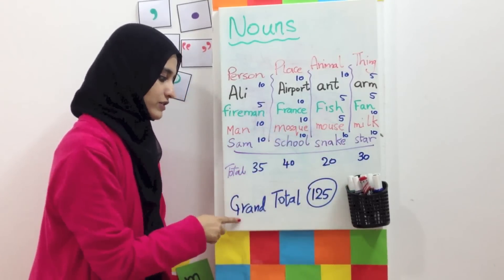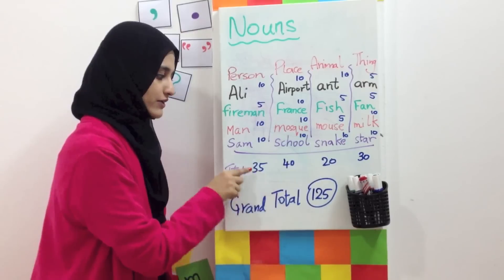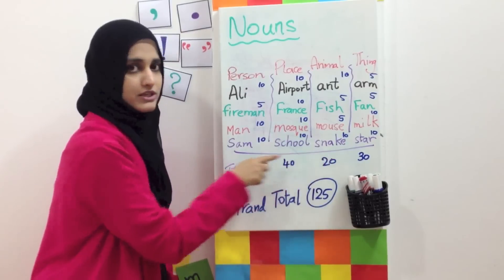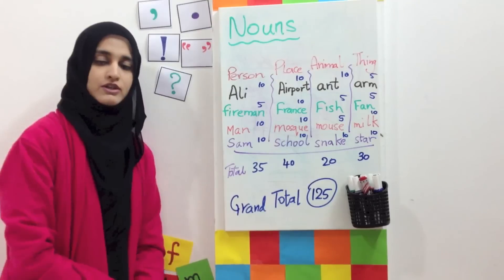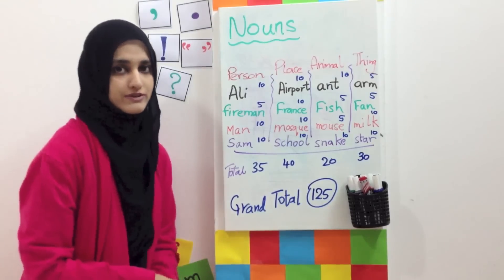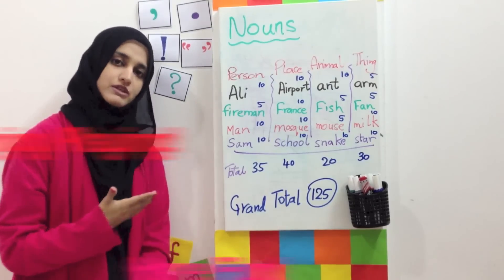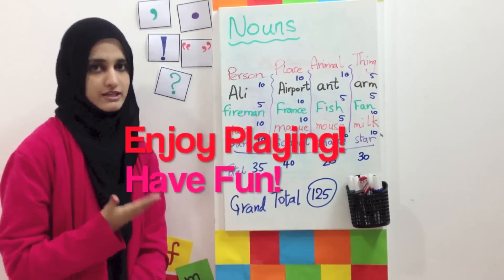Then you are going to have your grand total and add all these numbers together to get your grand total. Then you are going to compare and see who comes first, who comes second, and third.